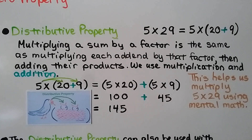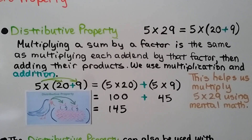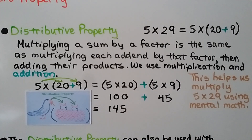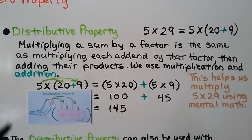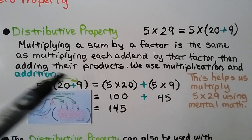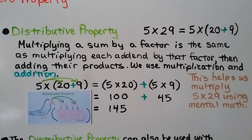So let's talk about the distributive property. Here we have 5 times 29. We can think of this as 5 times 20 plus 9. The distributive property says multiplying a sum by a factor is the same as multiplying each addend by that factor, then adding their products — we use multiplication and addition. So for 5 times 29, we have 5 times 20 plus 9, which equals 5 times 20 plus 5 times 9. We distribute the 5 to the 20 and to the 9. 5 times 20 is 100, and 5 times 9 is 45, and 100 plus 45 equals 145.